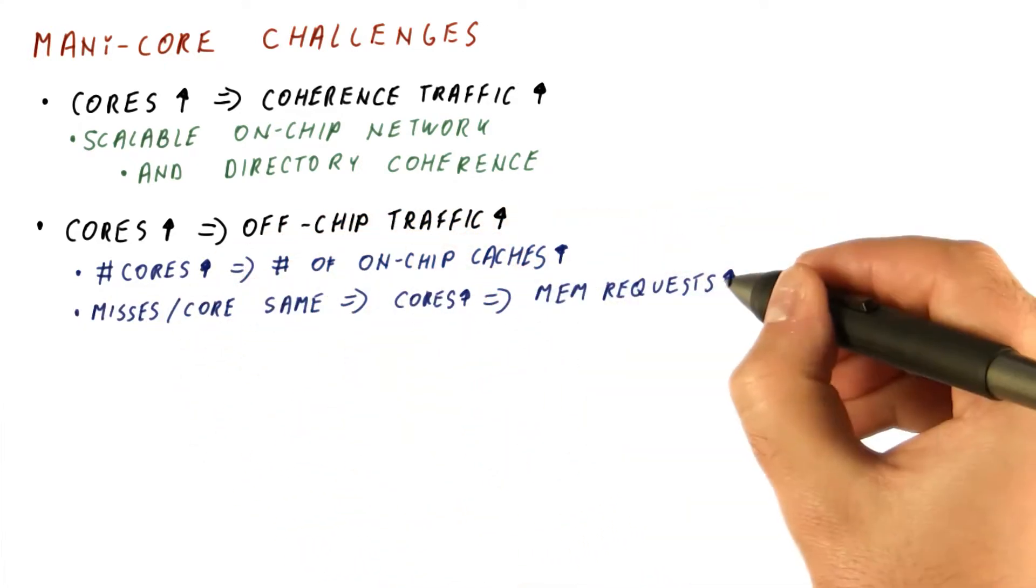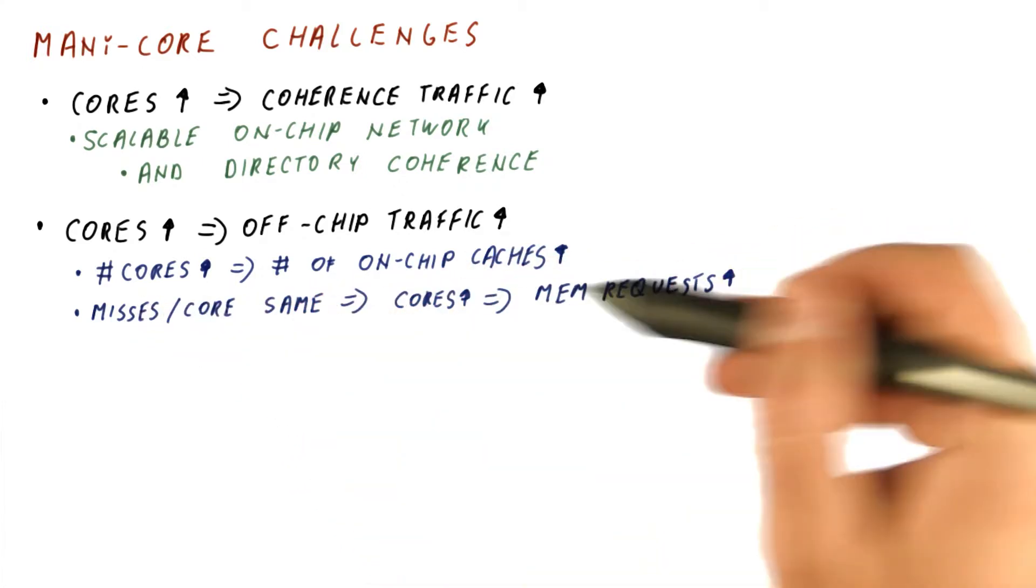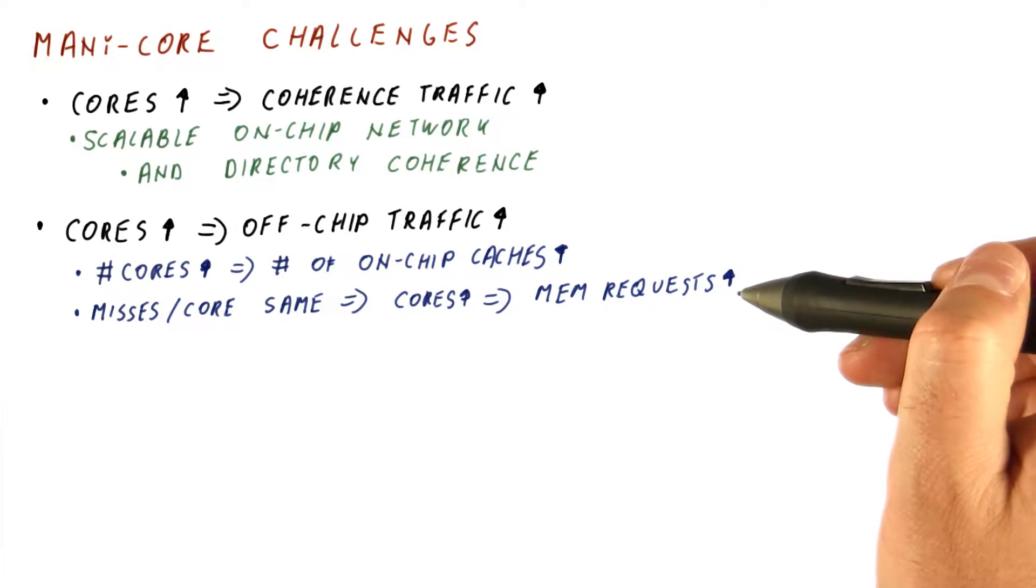So as we have more cores, the number of memory requests, which is what we do when we have a miss, would go up in proportion to the number of cores.